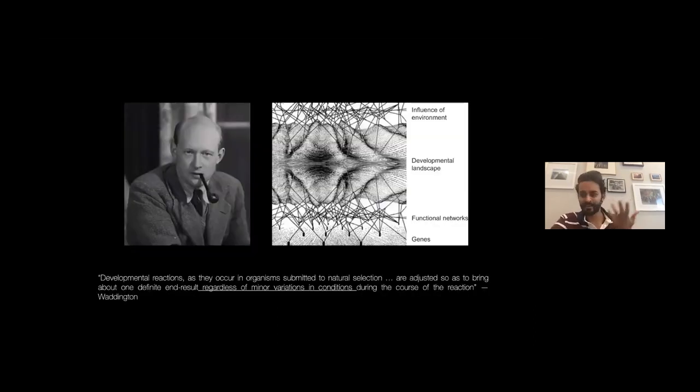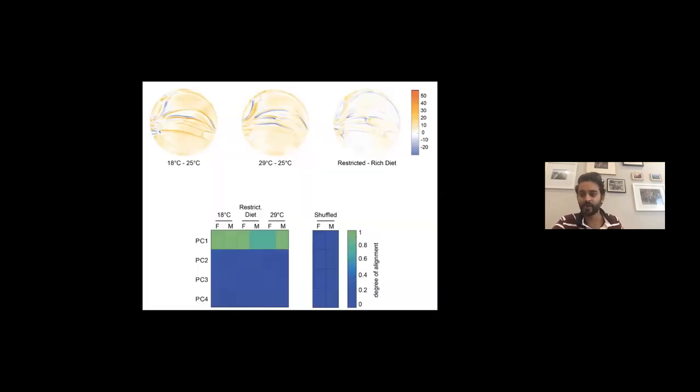Waddington even made a crazier claim: regardless of variation in condition, meaning even if you change the environment, forget if you change the genes, even if you change the environment, that should perturb the system in a similar way. That's a crazy hypothesis, but we went and did it. You can produce flies whose mothers have been raised at regular temperature, but just the eggs have been allowed to develop at altered temperature—so 25 is the usual thing, we did 18, 29, and then we did one population at 25 but a restricted diet.